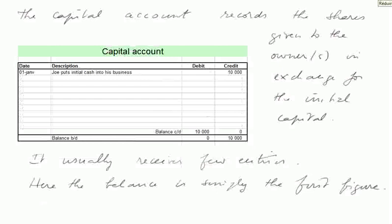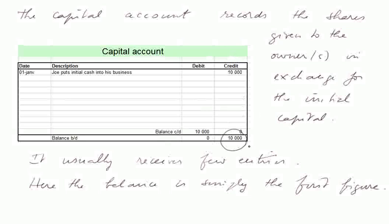The next account is the capital account. It records the shares given to the owner or owners in exchange for the initial capital. This records that Joe put initial capital in the form of cash — 10,000 euros — into his business. That was a debit in the cash account, and here in the capital account, it's a credit of 10,000 euros. The capital account usually receives few entries, and here the balance is simply the first figure. The balance brought down may be on the debit or credit side depending on which column has the most value.